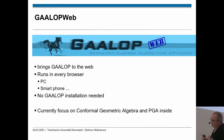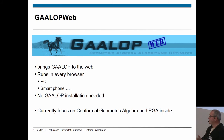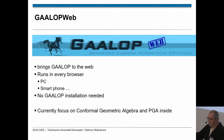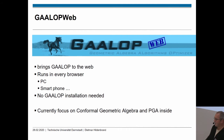Let's come now to GALOPweb. What is the difference from GALOP? GALOPweb is a new development to bring GALOP to the web — the only thing you need is a link, and then you can do everything without any software installation. It runs in every browser on PC, smartphone, whatever. Our current focus is on conformal geometric algebra, and we also included PGA — projective geometric algebra.